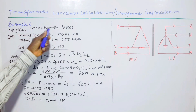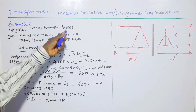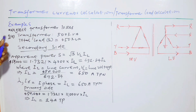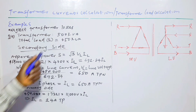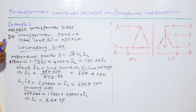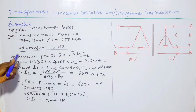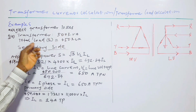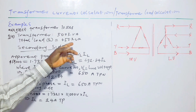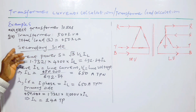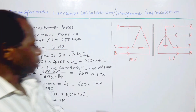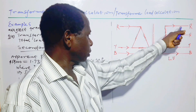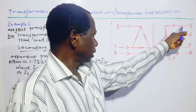It is part of the question that the losses in the transformer should be neglected. So neglect transformer losses. Now for the solution to part (a): the transformer rating is 500 kVA and the load given is 450 kVA.